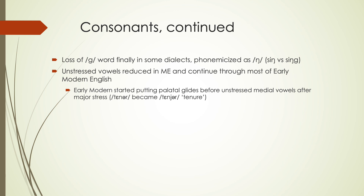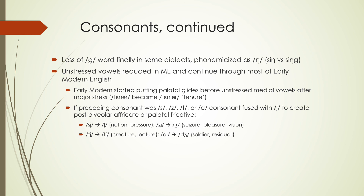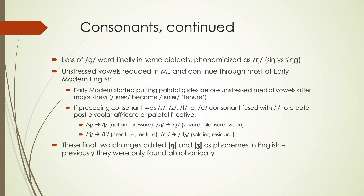Some unstressed vowels reduced and continued through Early Modern English, and some turned into consonants — we started putting palatal glides before some vowels, so 'tenor' became 'tenure.' With alveolar sounds, if it was a SIA, ZIA, TIA, or DIA sequence, they became strident sounds: SIA became SH, ZIA became ZH, TIA became CH, DIA became J. This is where we get sounds that are spelled very differently depending on how they may have been pronounced previously. These changes ended up giving us some additions as separate phonemes — previously NG and ZH were just allophones, only found in certain environments, but because of these sound changes, they became phonemic.